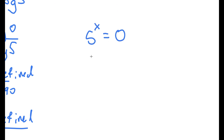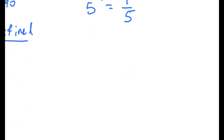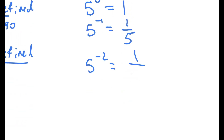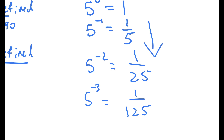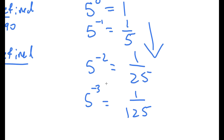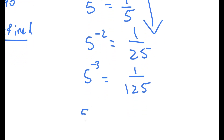Another way to prove this is our equation was 5 to the power of x equals 0. Well, 5 to the power of 0 is equal to 1. 5 to the power of negative 1 is equal to 1 over 5. 5 to the power of negative 2 is equal to 1 over 25. 5 to the power of negative 3 is equal to 1 over 125. This is going to go lower and lower, but it's actually never going to approach 0. No matter how low the exponent might be — even 5 to the power of negative 1 trillion — it's never actually going to be 0.